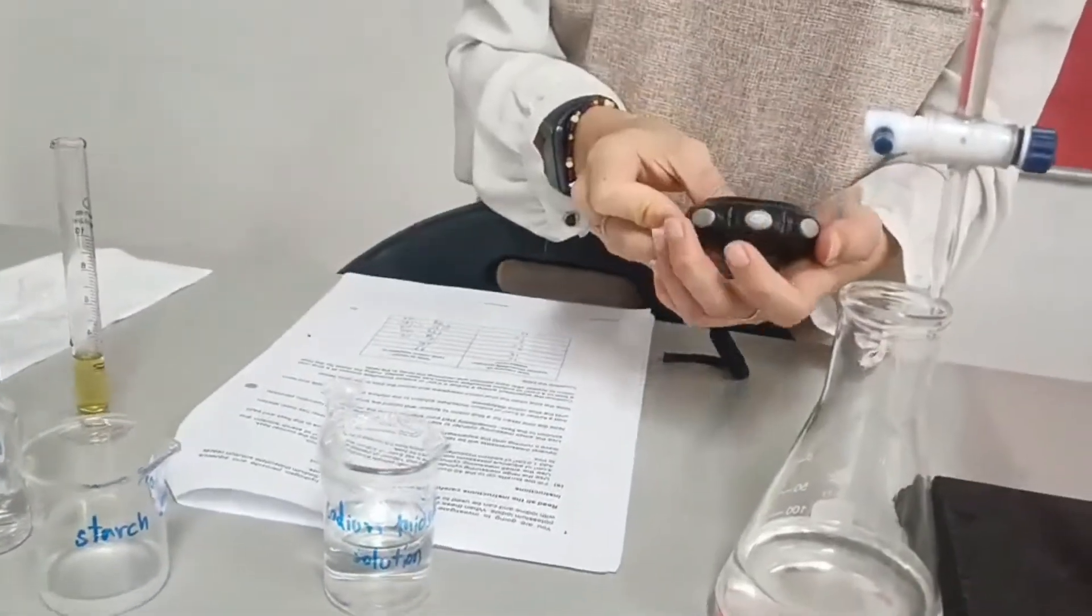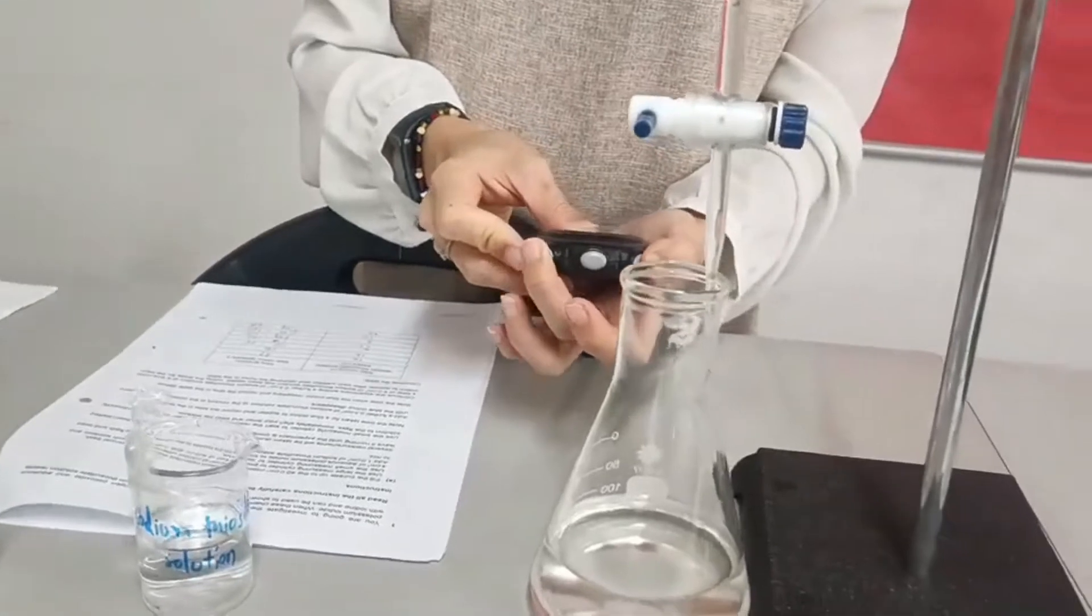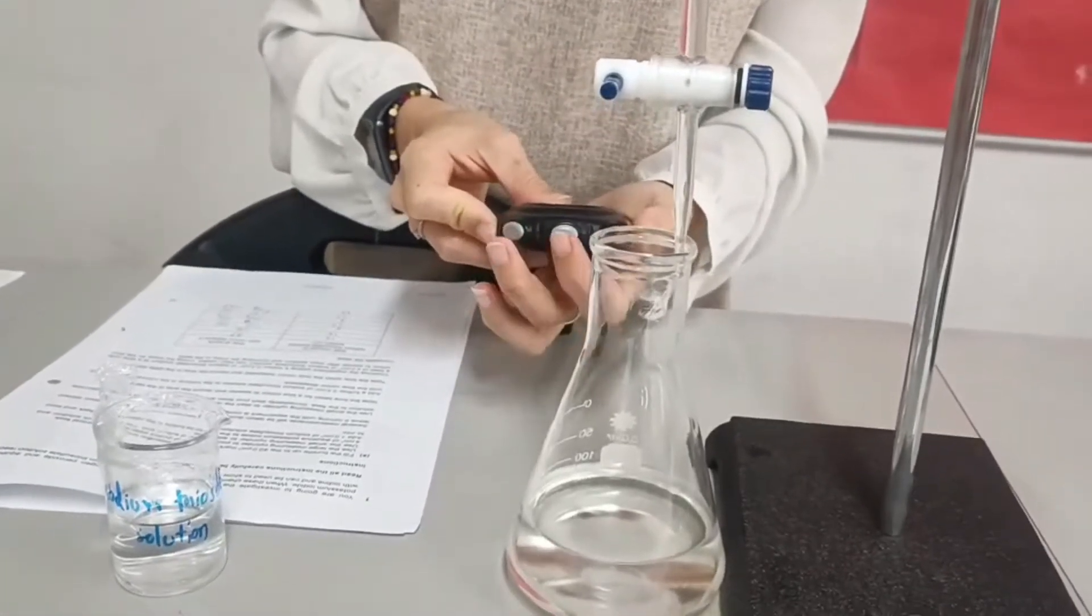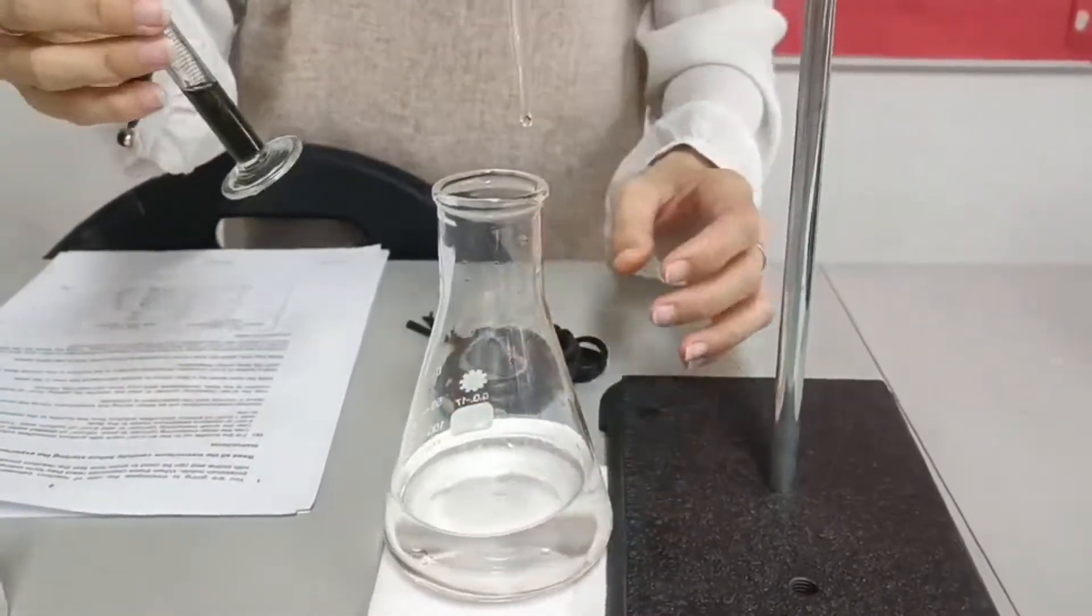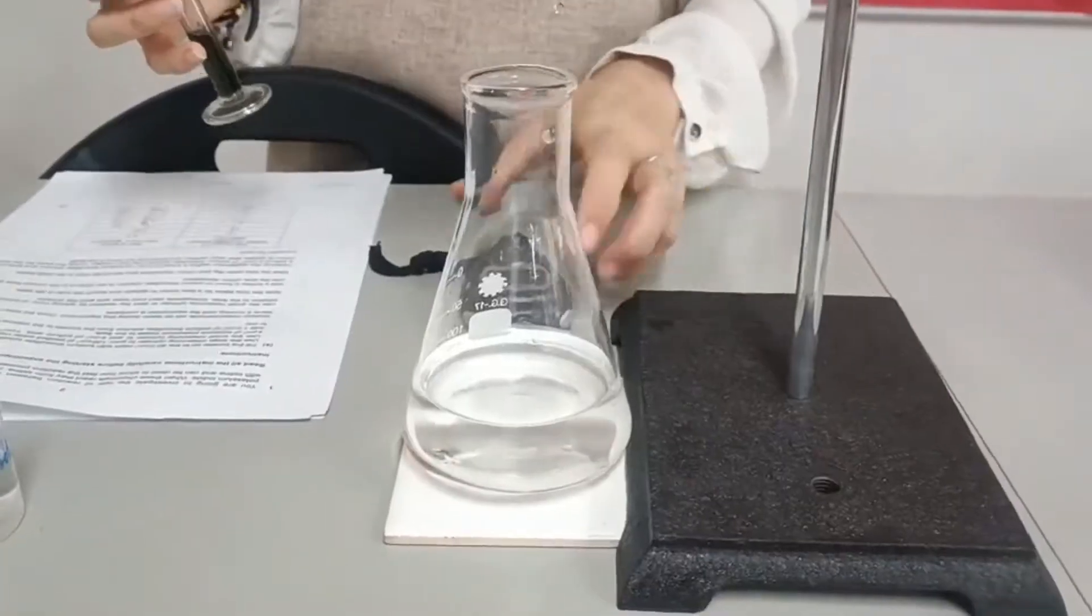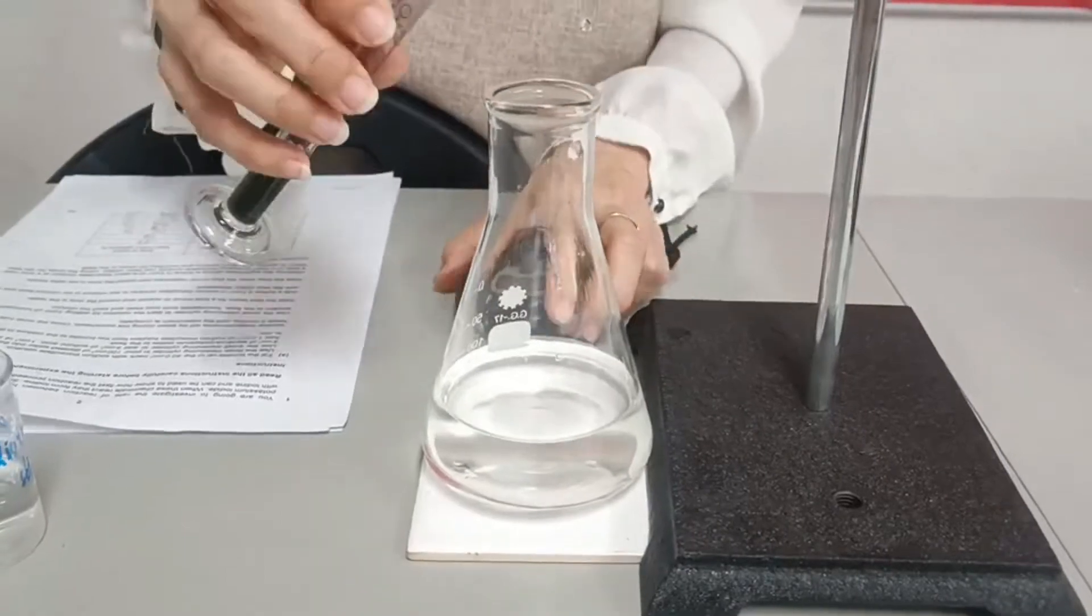And we want to start the timer the moment we add hydrogen peroxide in there. We start the addition of hydrogen peroxide and start the timer right away.